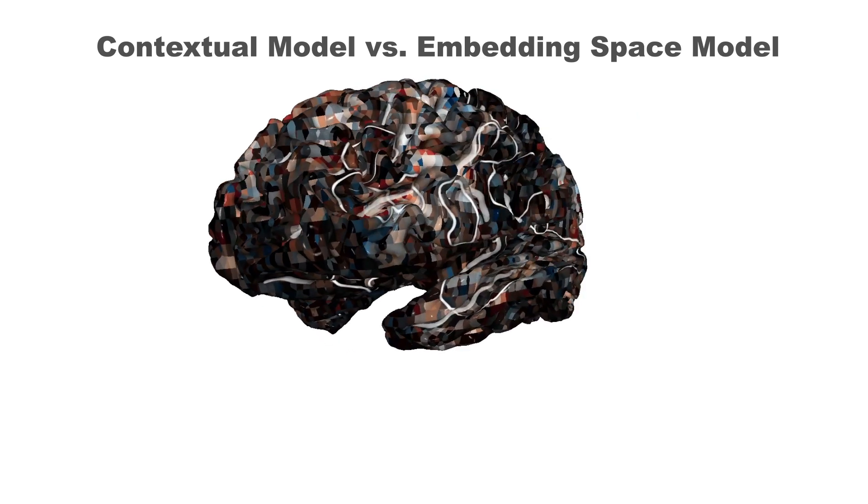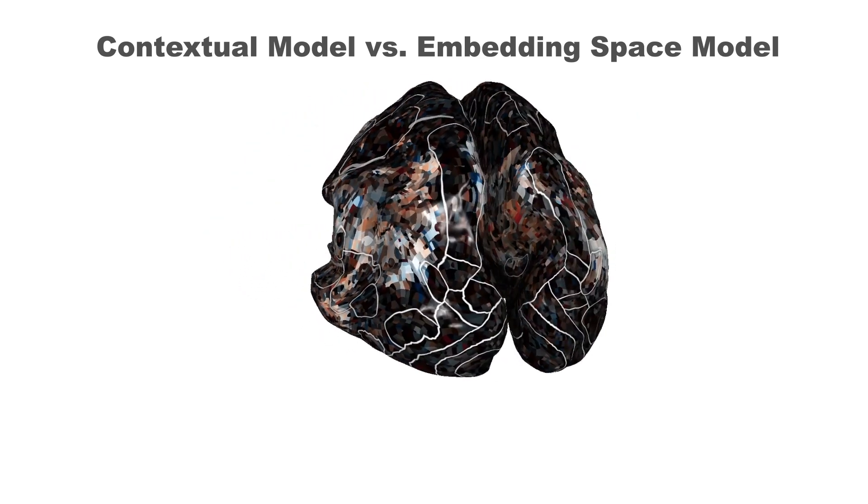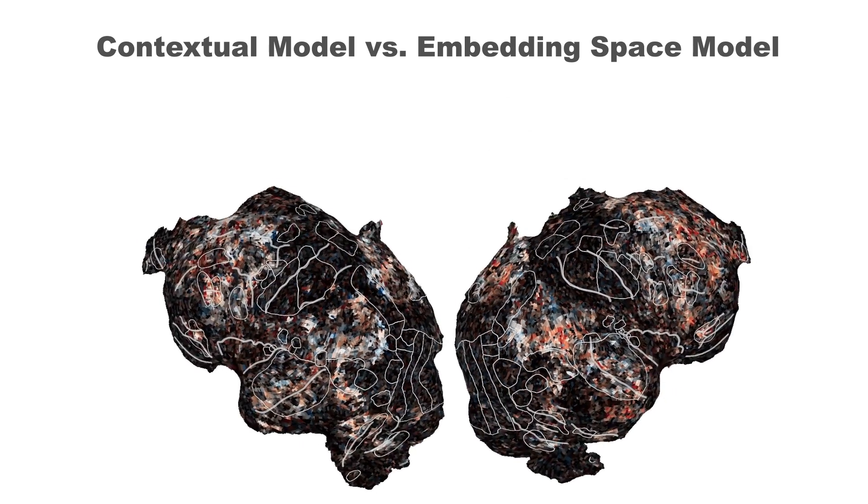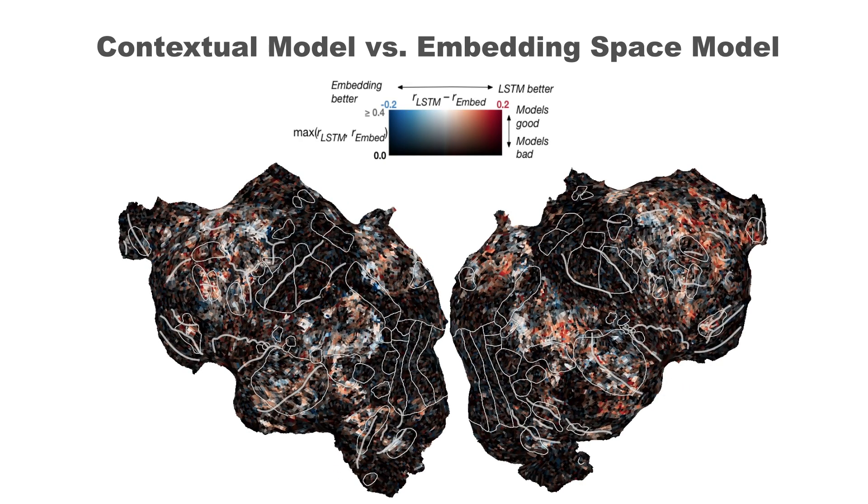This shows our model's performance for the middle layer and a context of length 10. The red areas indicate places in the brain where our model outperforms previous work. And as you can see, our model does much better.